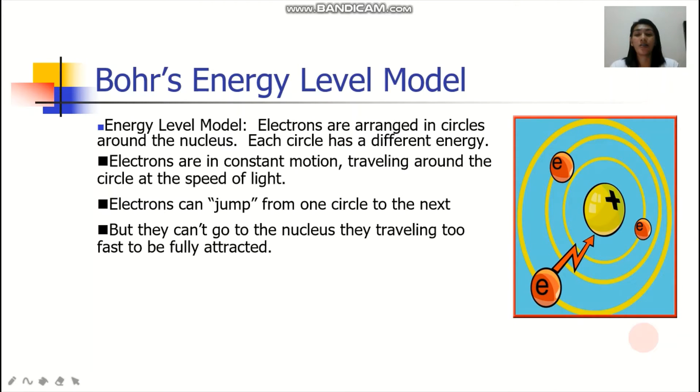The Bohr's energy level model actually tells us that electrons are arranged in circles around the nucleus. And that each circle has a different energy. Electrons are in constant motion, traveling around the circle at the speed of light. And electrons can jump from one circle to the next. But they can't go to the nucleus because they are traveling too fast to be fully attracted. We'll have a separate discussion on this energy level model.